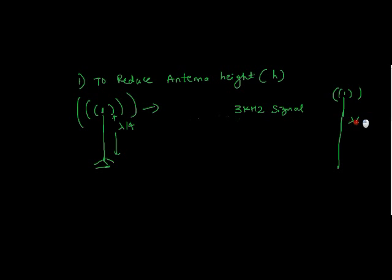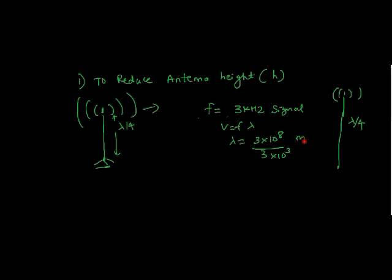Since we have a frequency of 3 kHz, the λ can be calculated using the formula v = f λ. So λ will be the velocity of light divided by 3 × 10³, which gives 10⁵ meters. Converting into kilometers, that is 100 kilometers.